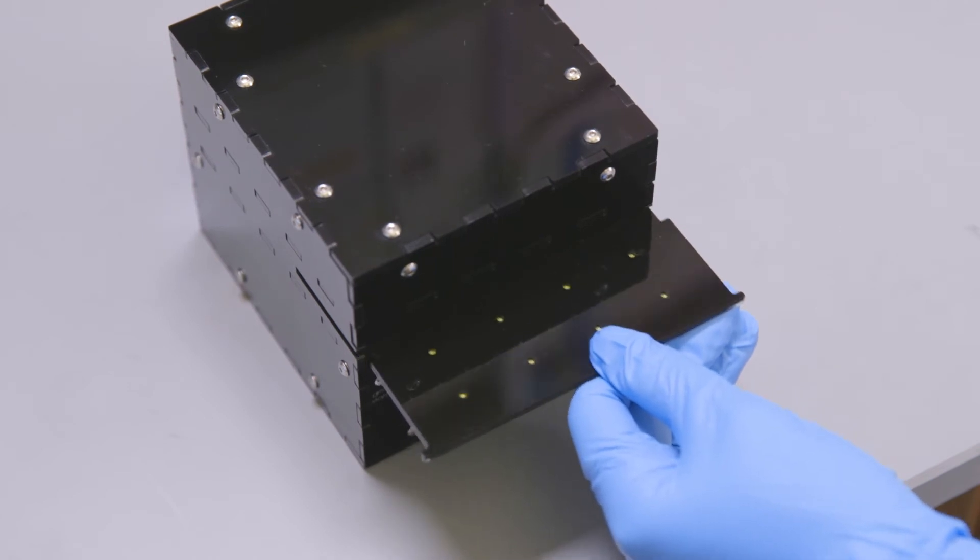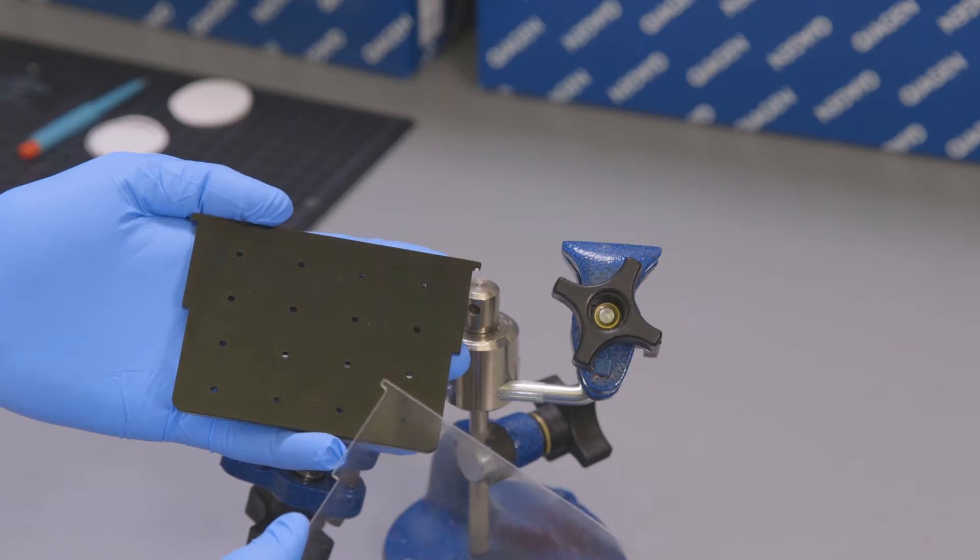Next is the cartridge layer, which holds the paper discs. The cartridge is made up of two laser-cut pieces of acrylic.